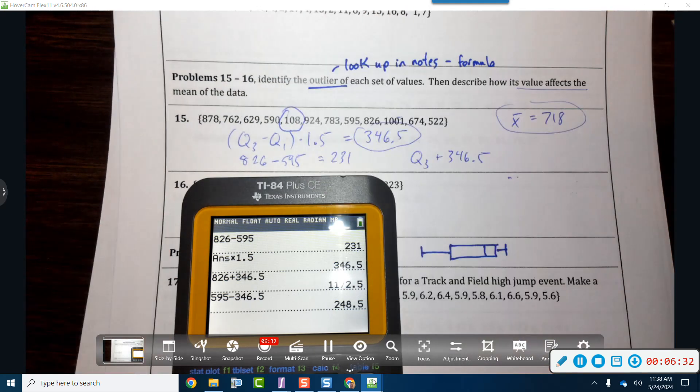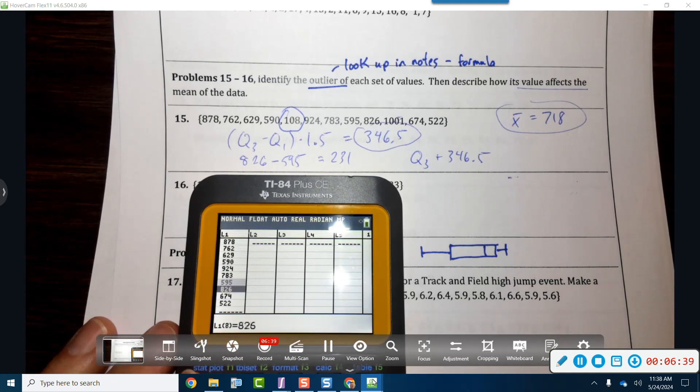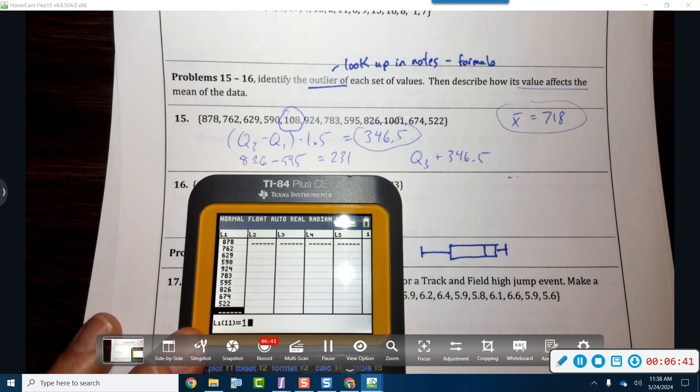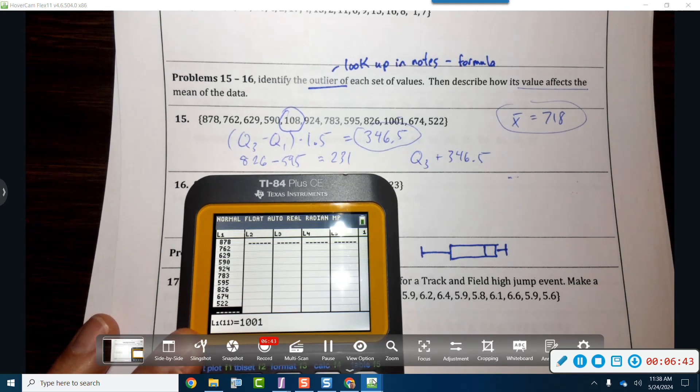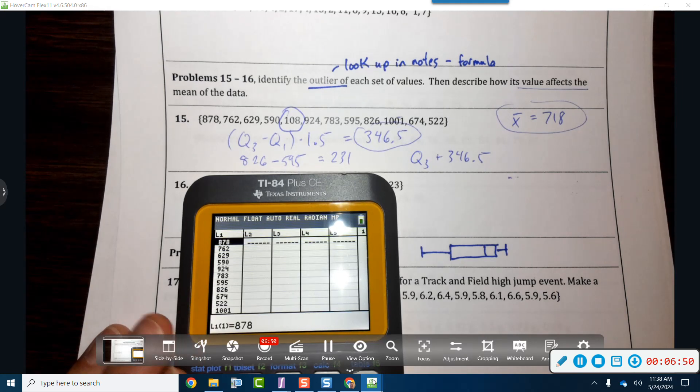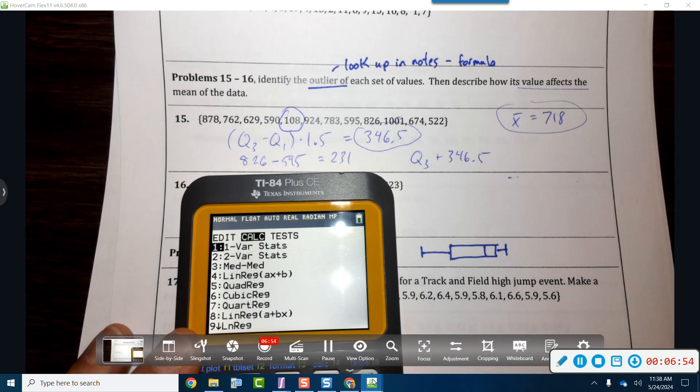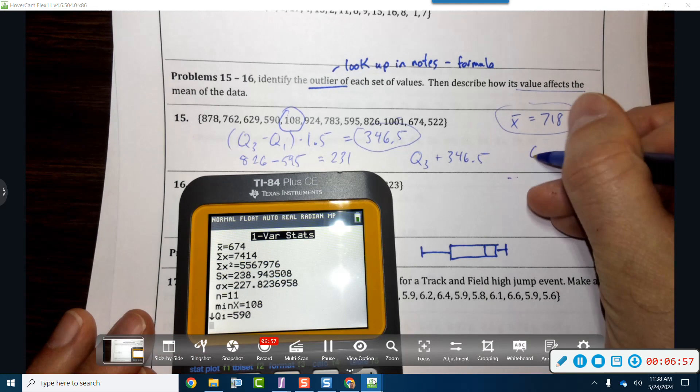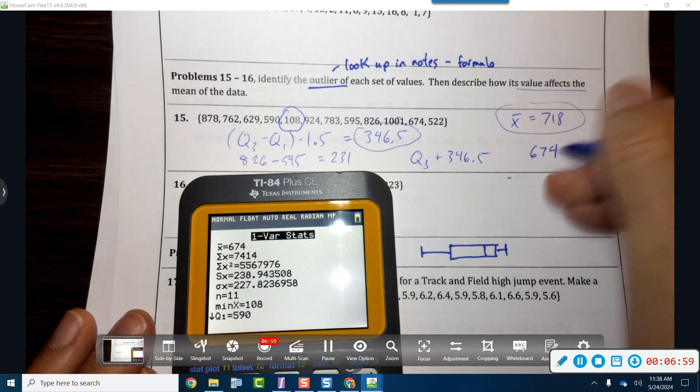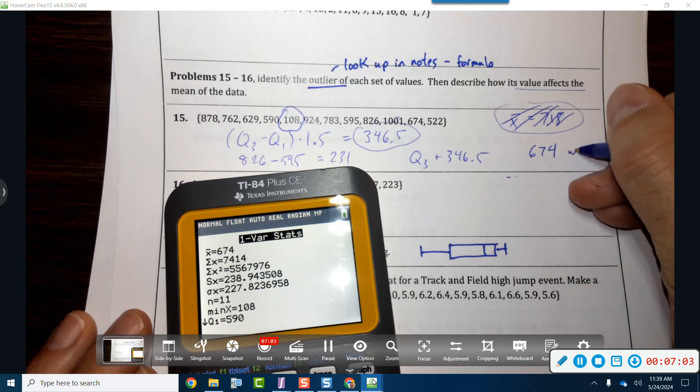So what we've got to do then is we have to go to our stat edit. We've got to include 1001, and then we'll go ahead and include the 108. Let's include the 108, let's get the mean. Now the mean is 674. This guy's junk. 674 with the outlier.